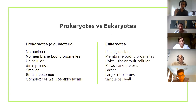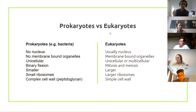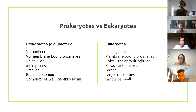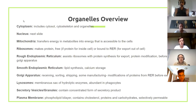Prokaryotic cells have ribosomes, but they're smaller than eukaryotic ribosomes — I think it's 70S versus 80S, or 60S versus 70S. Prokaryotic cells also have cell walls which are more complex, containing peptidoglycans, whereas eukaryotic cell walls are simpler and lack peptidoglycans.